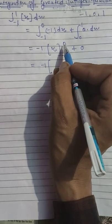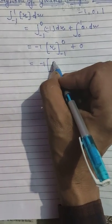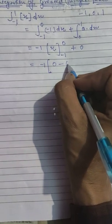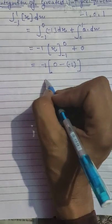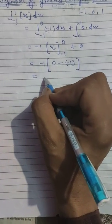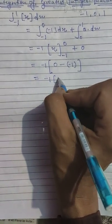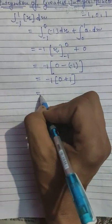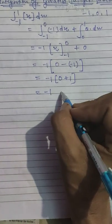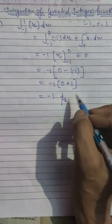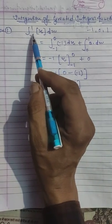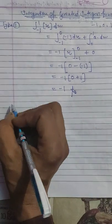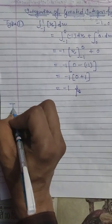Putting in the upper limit 0, then minus the lower limit -1: we get -1·(0 - (-1)) = -1·(1) = -1. The second integral is 0, so the final answer is -1. That is the answer when you integrate the greatest integer function over this interval. Now I'll show you Type 2.